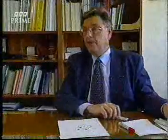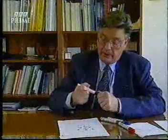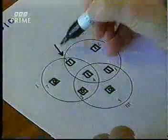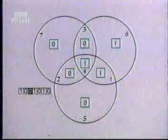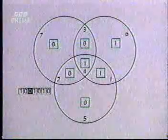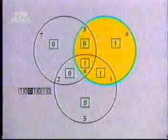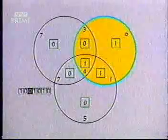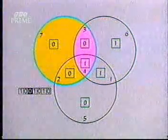Now, suppose an error occurs. Let us say an error occurs in position 3. I shall mark it by an arrow. So that means this 1 is read as a 0. Now, the receiver sees that something is wrong in circle 2, because the number of 1s has become odd. Something is wrong in circle 1 because the number of 1s is again odd.